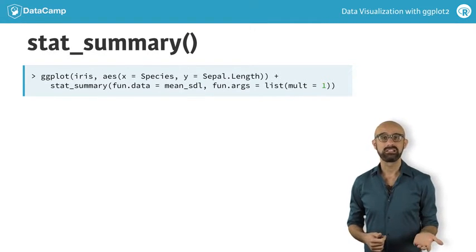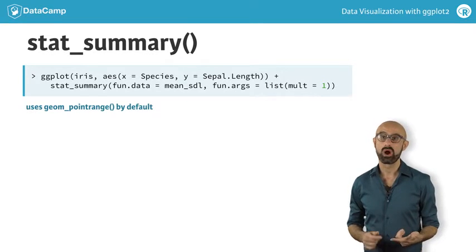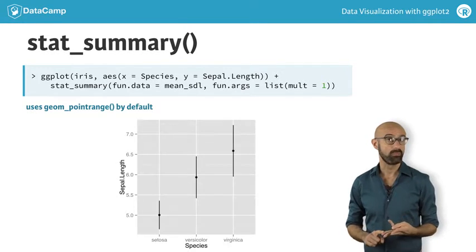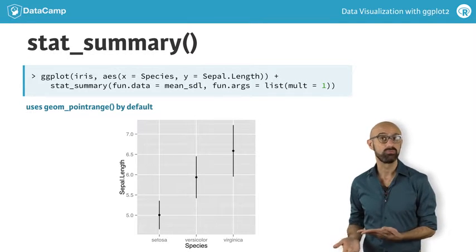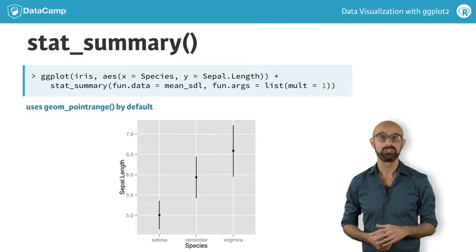By default, the stat_summary function uses geom_point_range, which requires y, ymin, and ymax, exactly what is returned by mean_sdl, so everything works very well together.